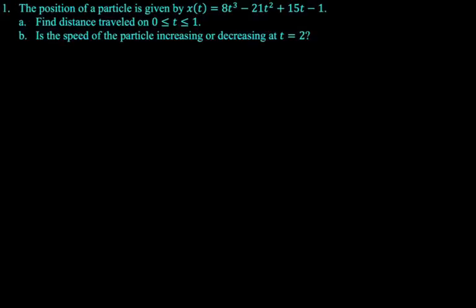Alright, the position of a particle is given by x(t) = 8t³ - 21t² + 15t - 1. We want to find the distance traveled on 0 to 1, and then we want to know if the speed is increasing or decreasing at t equals 2.